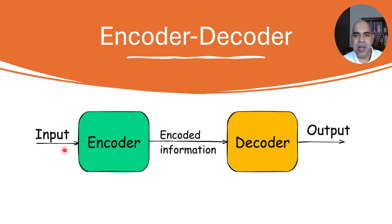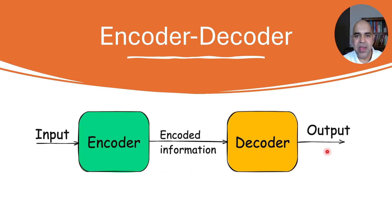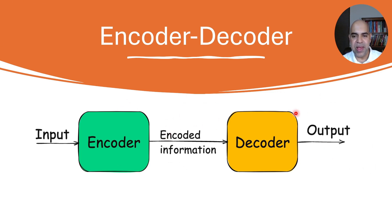As an example, in machine translation you provide an English sentence as the input. The sentence is encoded into a context vector. The decoder knows how to convert the encoded context vector to a Spanish sentence. The encoder and the decoder can be a recurrent neural network or a variant such as LSTM.